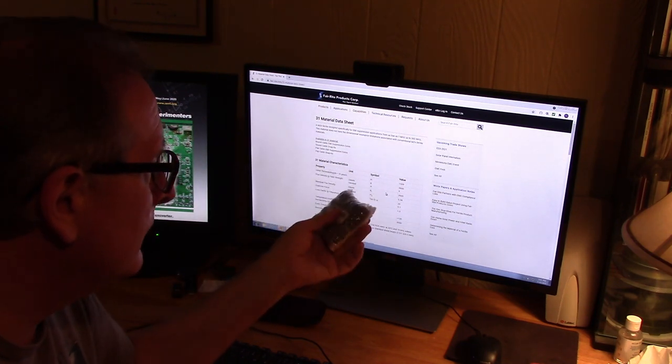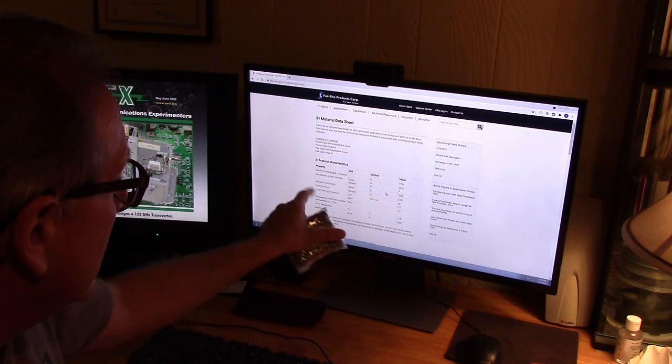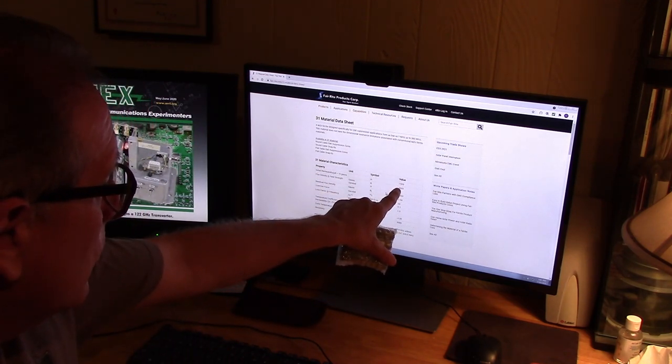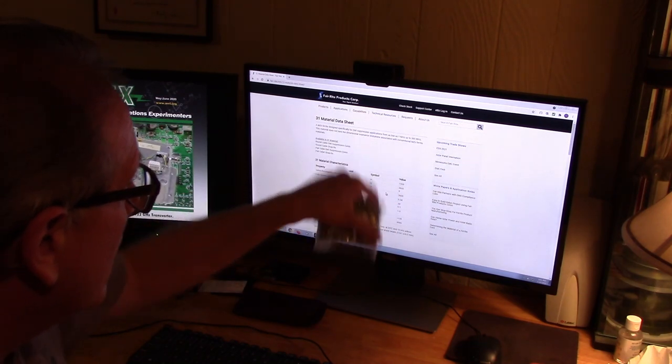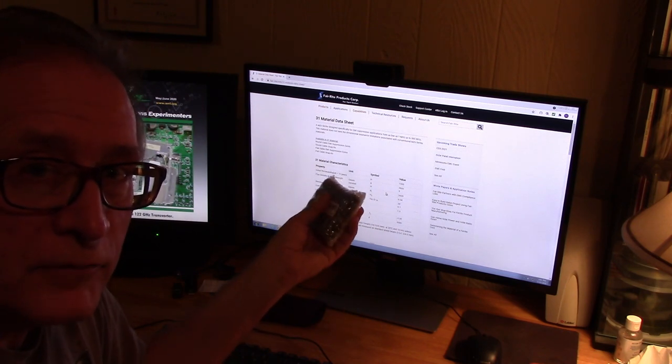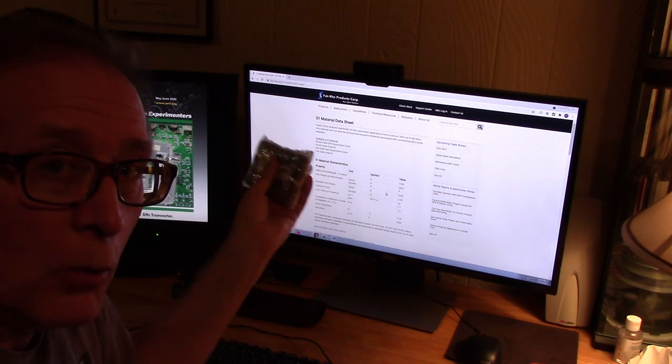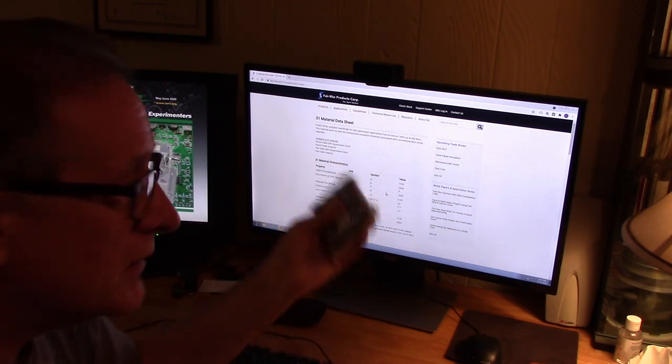Now when you're selecting your core material for your snap-on ferrites, it's best to use cores that are going to be effective in the frequency range that you're using the loop in. In our case, we're designing a shortwave loop. So we would like to have a fairly high permeability core like this 31 material from Ferrite. The 43 type snap-on beads are going to work okay, but you may need to use more of them than the 31 type material.